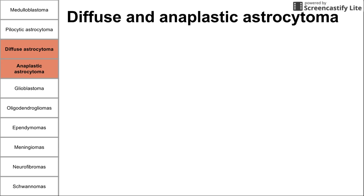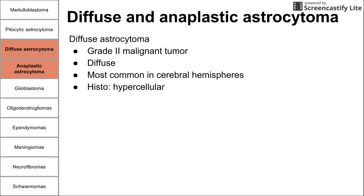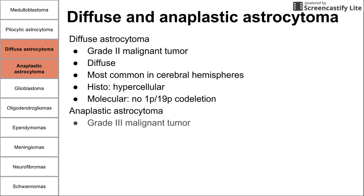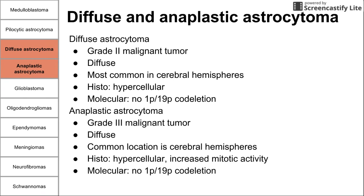The next two astrocytomas are diffuse astrocytoma and anaplastic astrocytoma. Diffuse astrocytoma is a grade two malignant tumor. Unlike the others we've talked about, this one is diffuse. These are most common in the cerebral hemispheres above the tectorial line. On histology, you see a hypercellular tumor — way more blue or purple than you're used to seeing. Molecularly, there is no 1p19q codeletion, which will help you differentiate from oligodendrogliomas. Anaplastic astrocytoma is pretty similar — grade three, slightly worse, also diffuse, also in the cerebral hemispheres. On histology, you see hypercellularity and increased mitotic activity. Also no 1p19q codeletion, again to help differentiate from oligodendrogliomas.